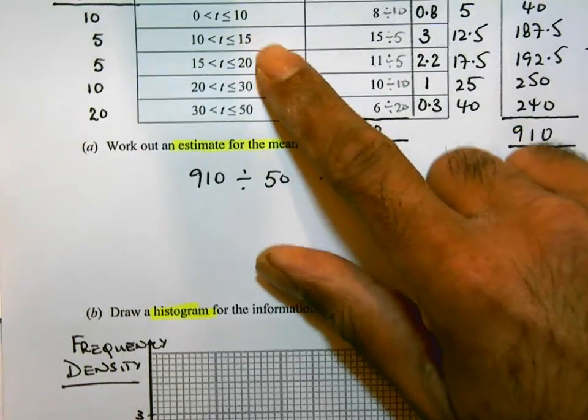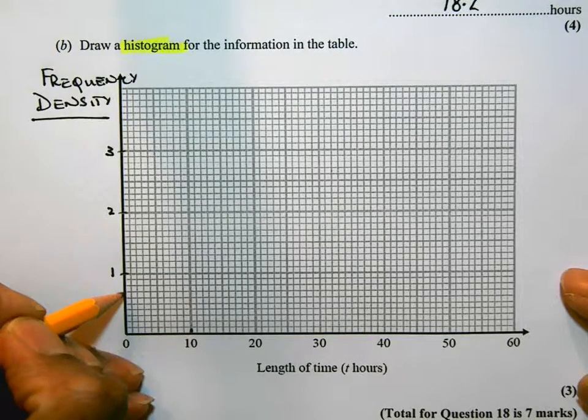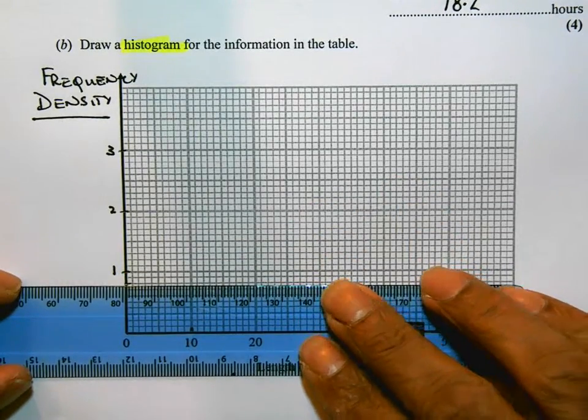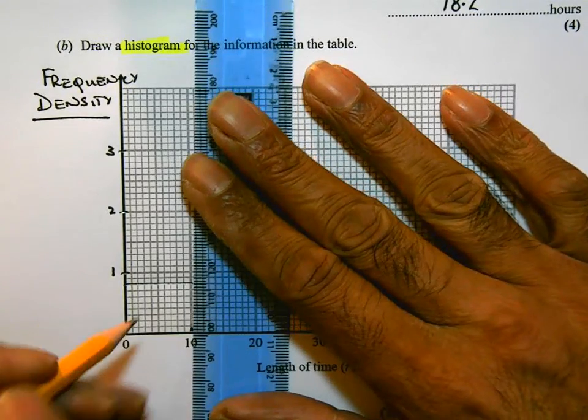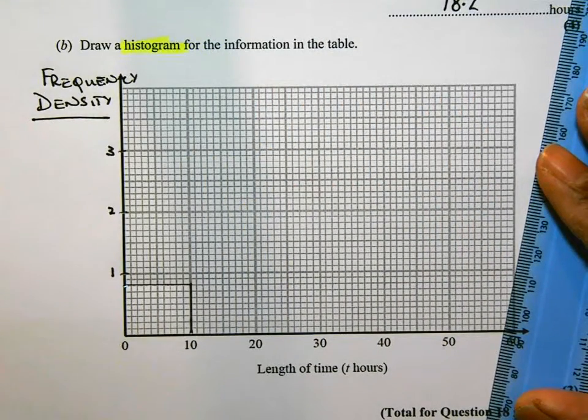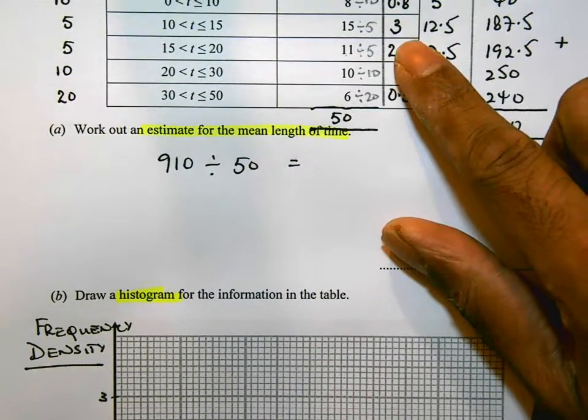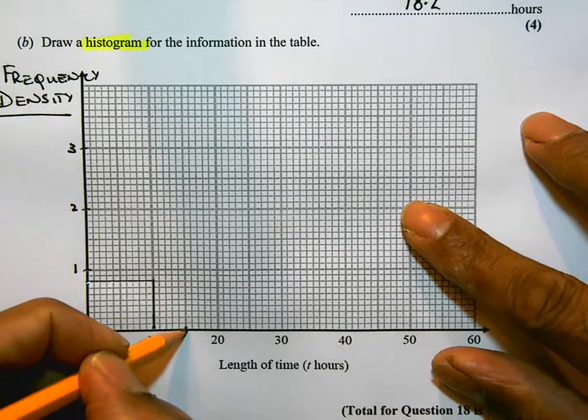So let's go to our first bar. Our first bar goes from 0 to 10 and the frequency density is 0.8. So going back to my graph, it goes from 0 to 10 and the frequency density is 0.8. So make sure you use a ruler for this and you take your time doing it. I'm going to draw a block here. So that's my first bar on the histogram. The second bar is going to go from 10 to 15 and its frequency density is 3. So back up, 10 to 15 and its frequency density is 3. So I'm just going to put in some dots to mark that.